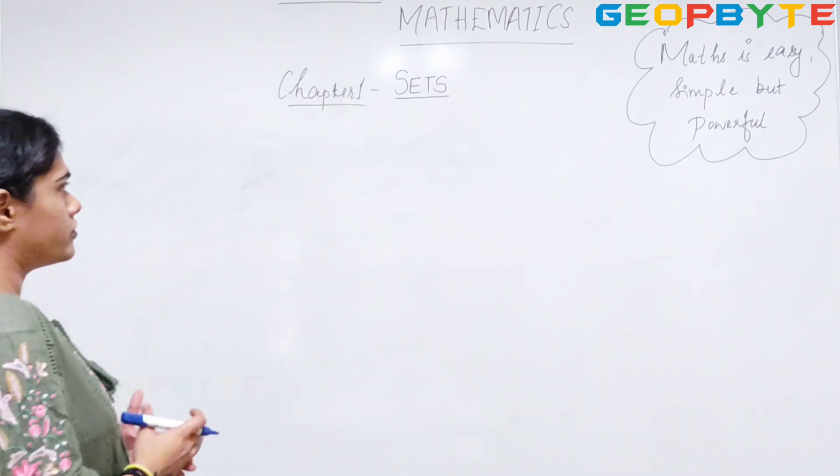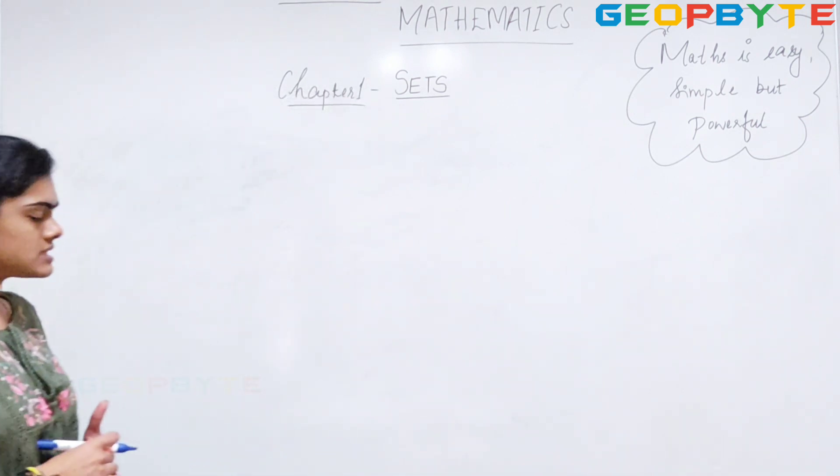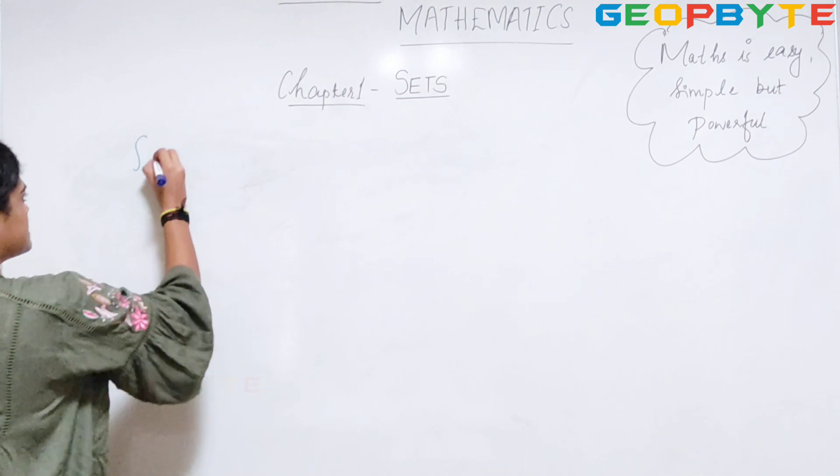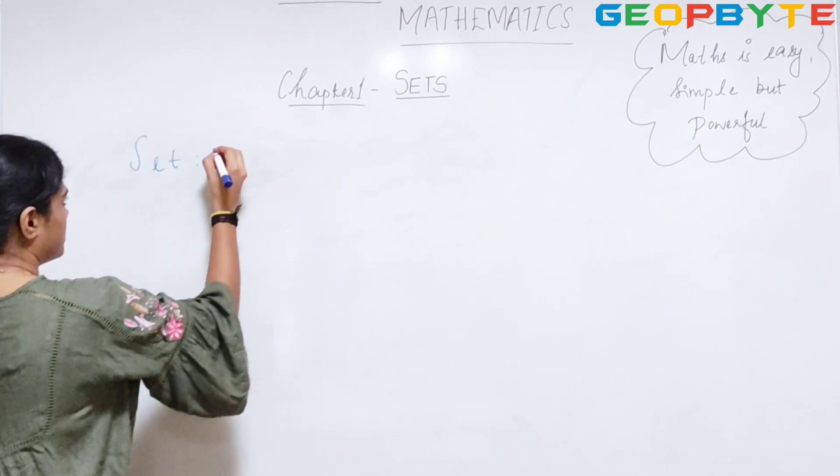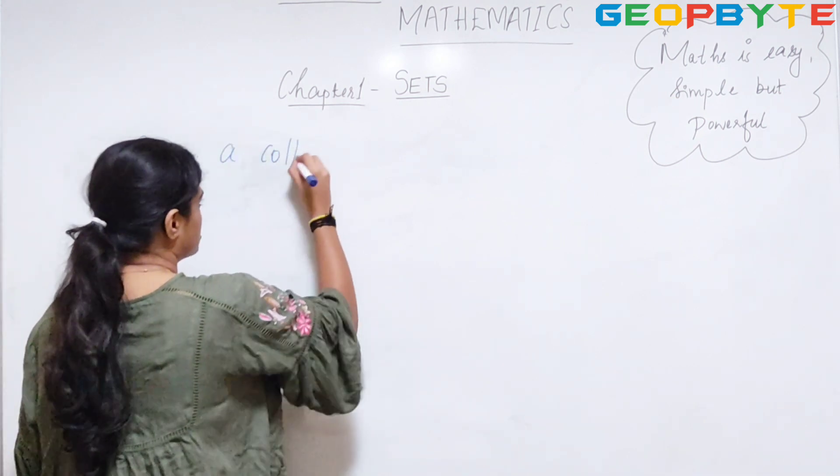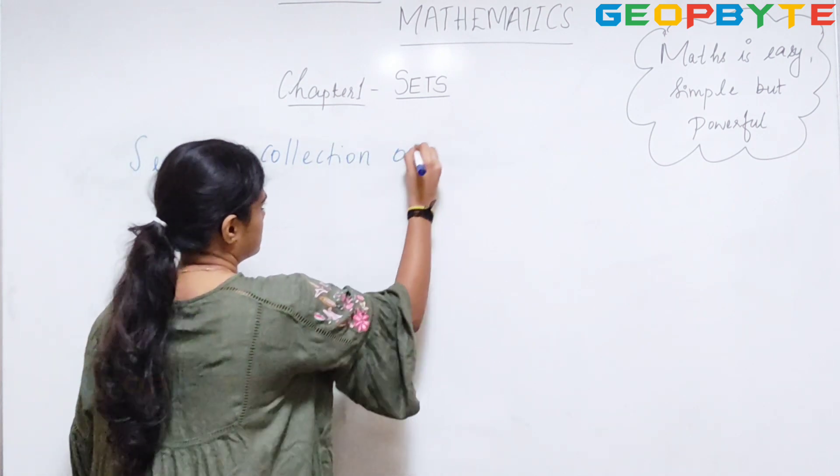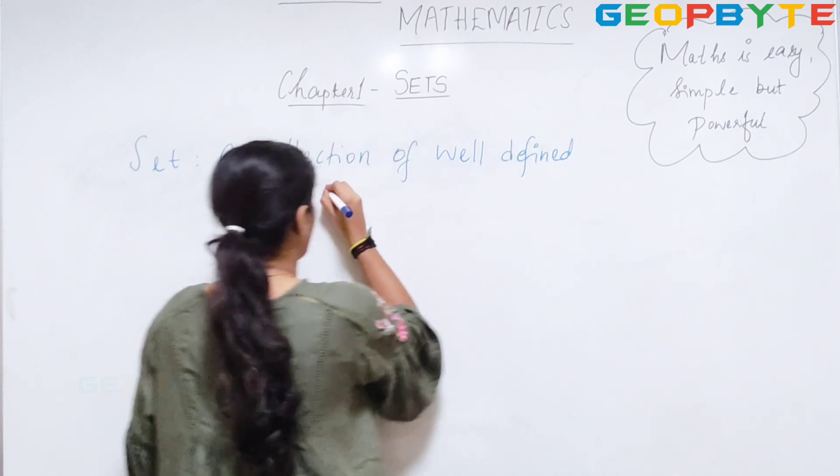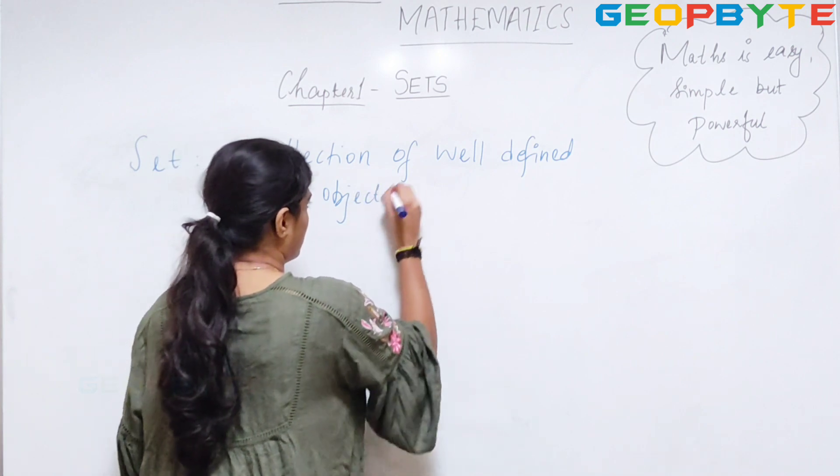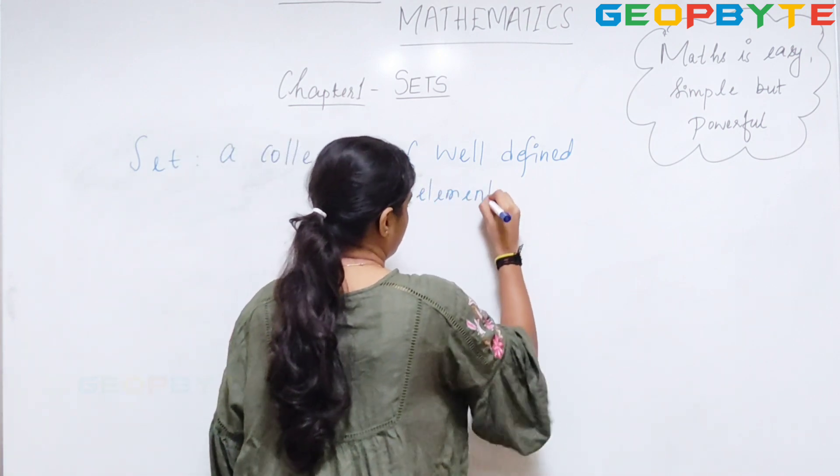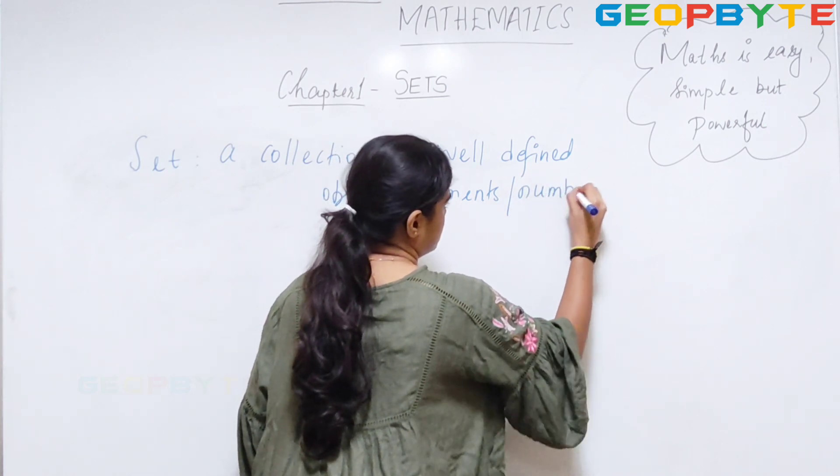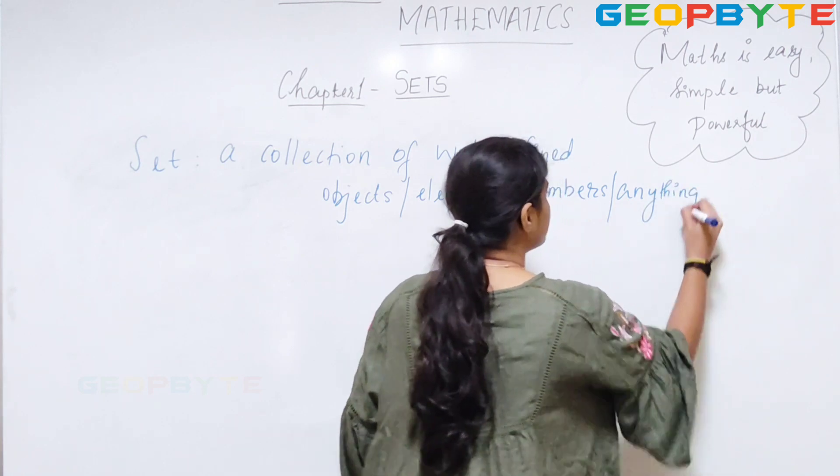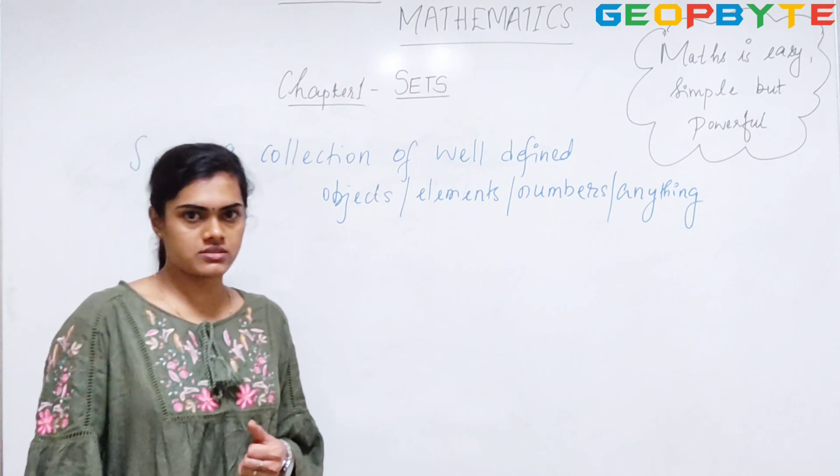So, coming to the chapter, first chapter SETS. I will explain what a SET is. SET is actually a collection of well-defined objects or elements or numbers or anything. The main feature of SETS is that it does not vary from person to person.